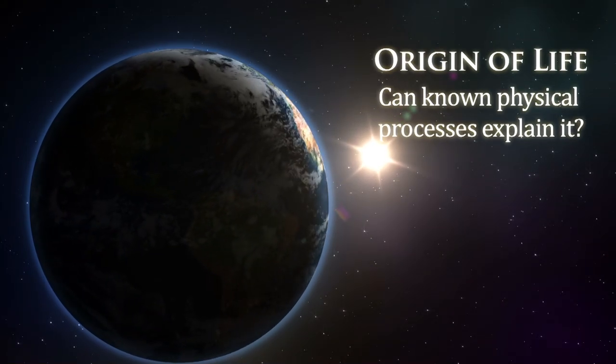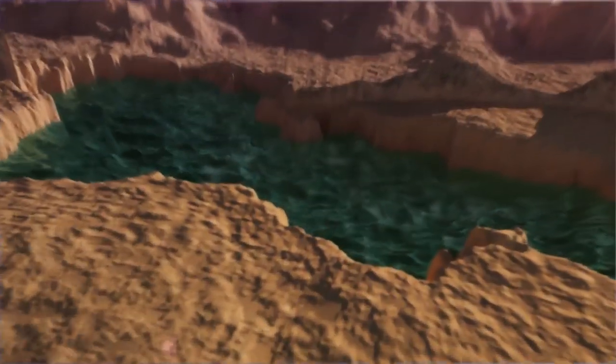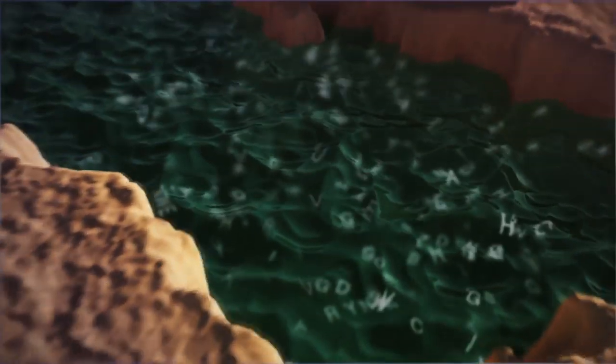The general theory of evolution says that all living things came from a single cell and that cell came from something like a primordial soup. And for me as a chemist, the hardest problem for evolution is the origin of first life from non-living chemicals and this is commonly called chemical evolution.